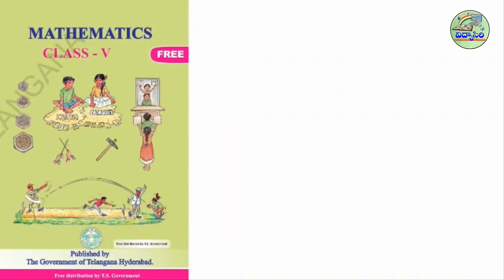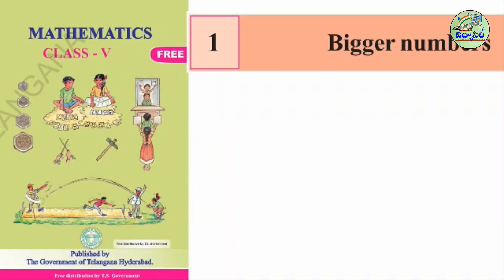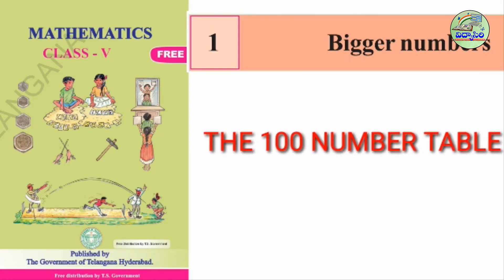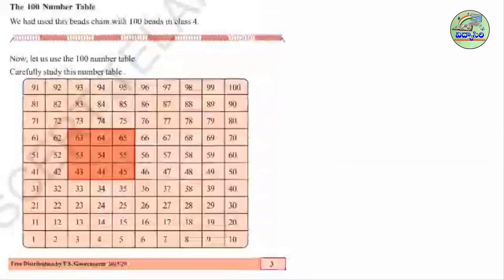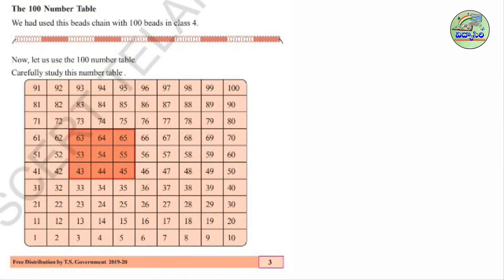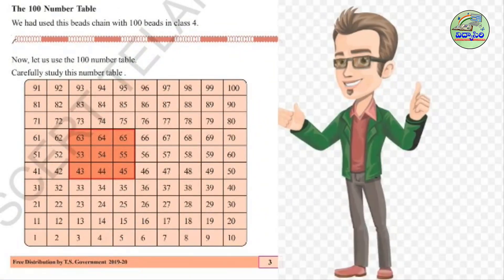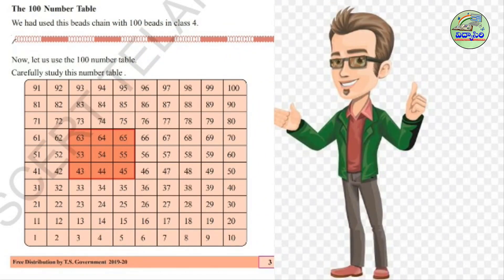From this 5th class mathematics, 1st chapter: bigger numbers. From bigger numbers, the topic is the 100 number table. Please open your maths textbook page number 3. You can look at the 100 number table.